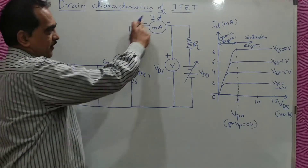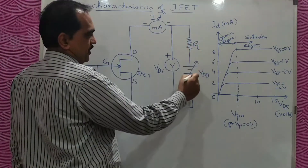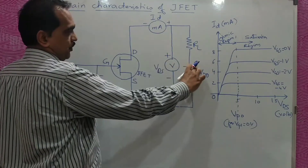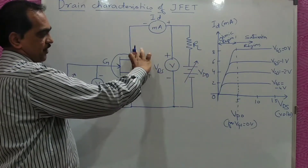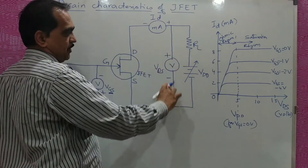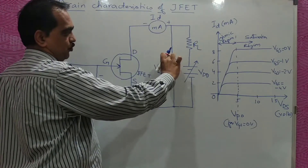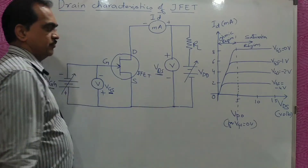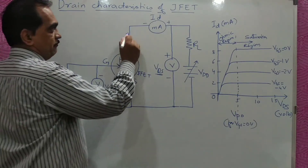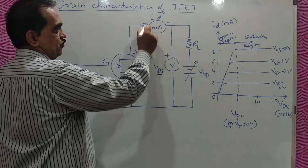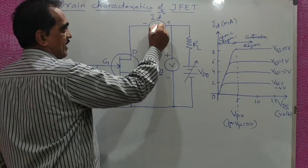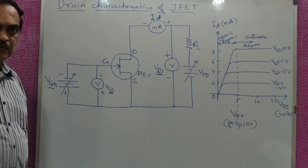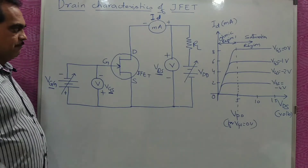Similarly, you connect an output voltage through a resistor RL, called VDD, applied across drain and source, measured by a voltmeter as VDS. The current flowing in the output circuit is measured by a milli-ammeter, noted as drain current ID.